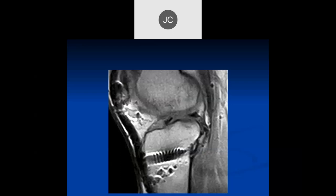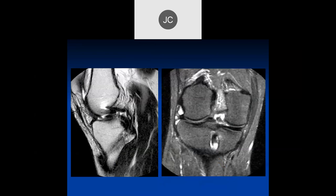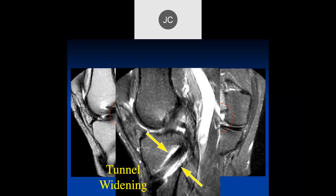We're looking at a PCL graft that's way too inferior for the tibial tunnel. I don't really see much of a graft here. Here's the tibial tunnel, but the graft is torn right into there - that was a PCL graft tear. That looks like another PCL repair with the tibial tunnel. It looks like there are some fibers distally, but I don't see the proximal fibers. There's also tunnel widening here, and this turned out to be a partial tear. They actually replaced the graft when they went in.